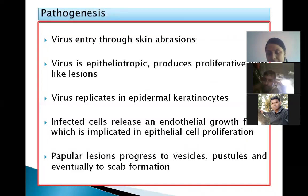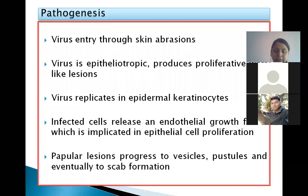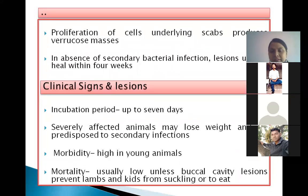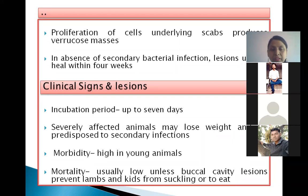Lesions develop in different stages. First, papular lesions develop, which are tiny skin eruptions. Then vesicles form, which are tiny eruptions filled with serous fluid. Then pustules develop, meaning the eruptions become filled with purulent material, and eventually scab formation occurs where the lesions dry and form crusts. The proliferation of cells underlying the scab produces coarse, wart-like elevations. In the absence of secondary bacterial infections, lesions usually heal within 4 weeks.